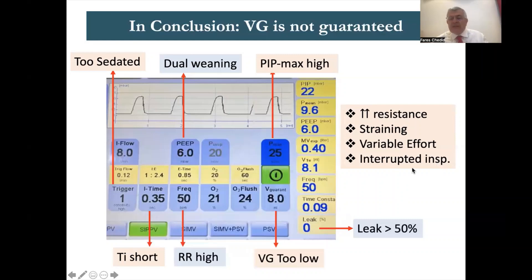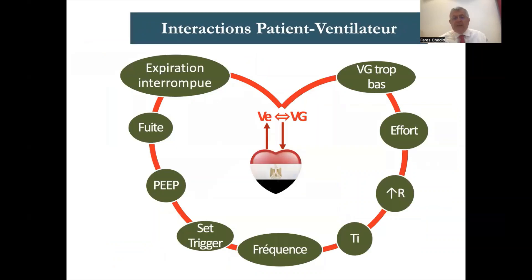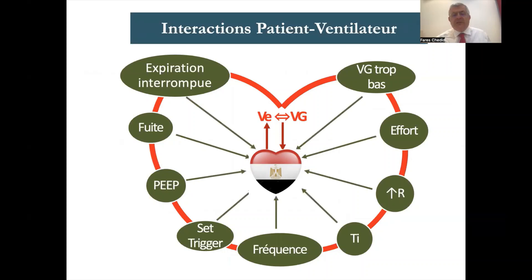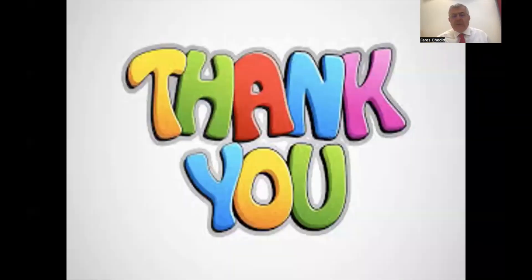Also, interrupted inspiration can sometimes affect PIP. I hope this was relatively clear. To conclude: the relationship of love between PIP and expiratory volume in volume guarantee may not last more than one day — like the brief marriage in our analogy — because of so many interferences. When you put a patient on volume guarantee, it is important to round frequently and check whether any of these elements are affecting him. Thank you very much.